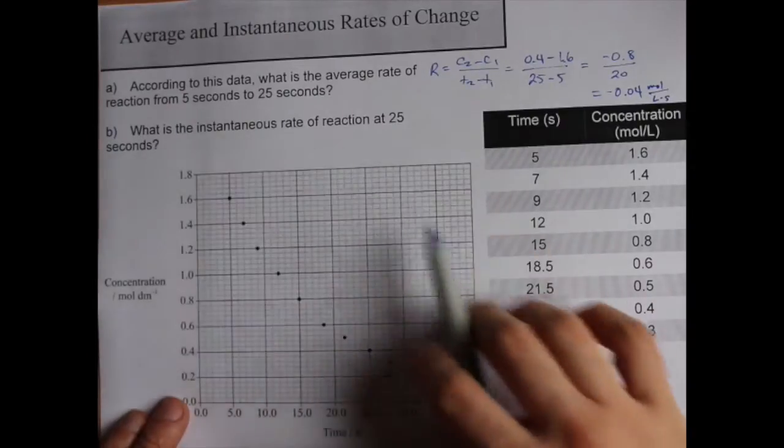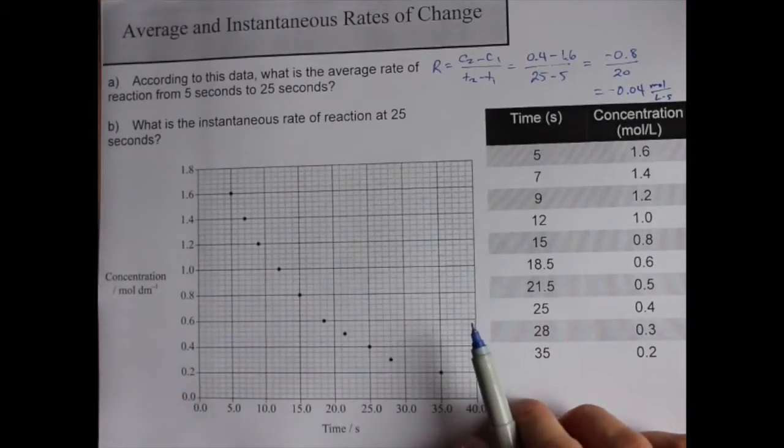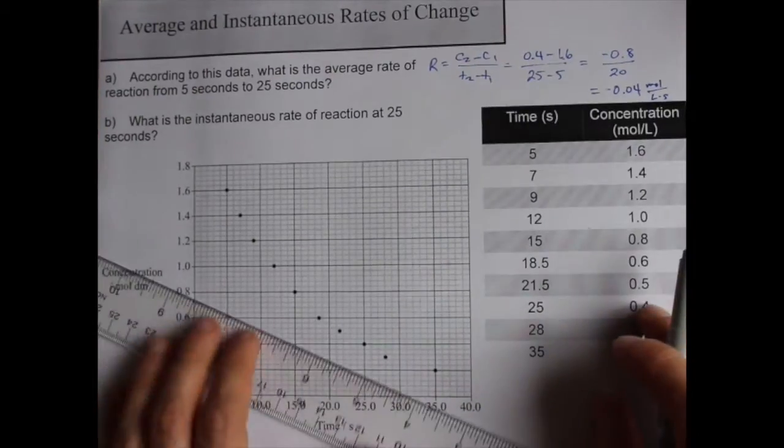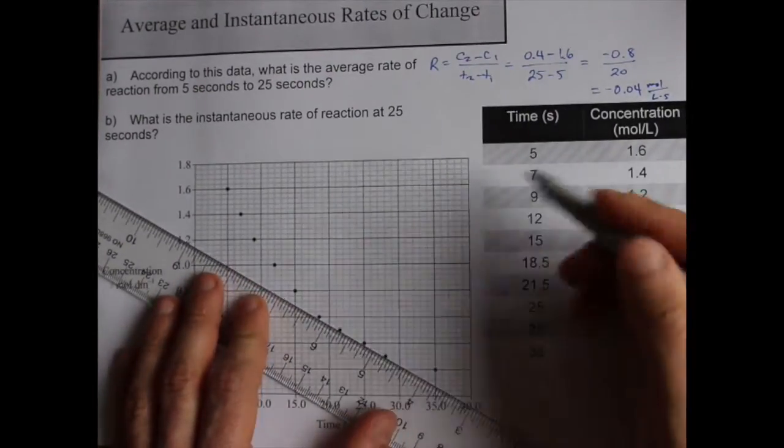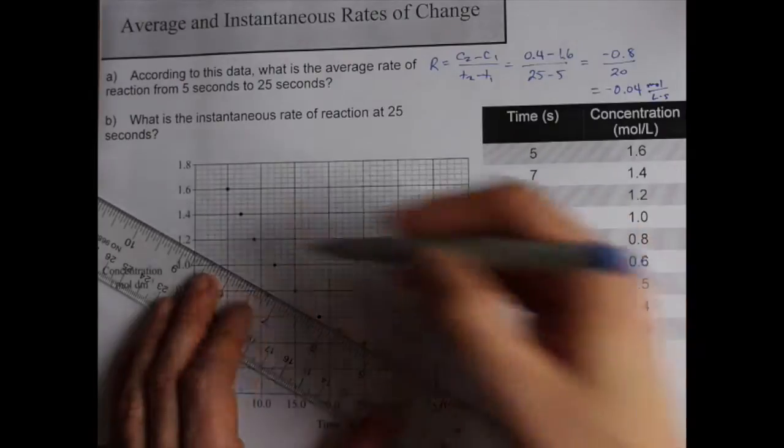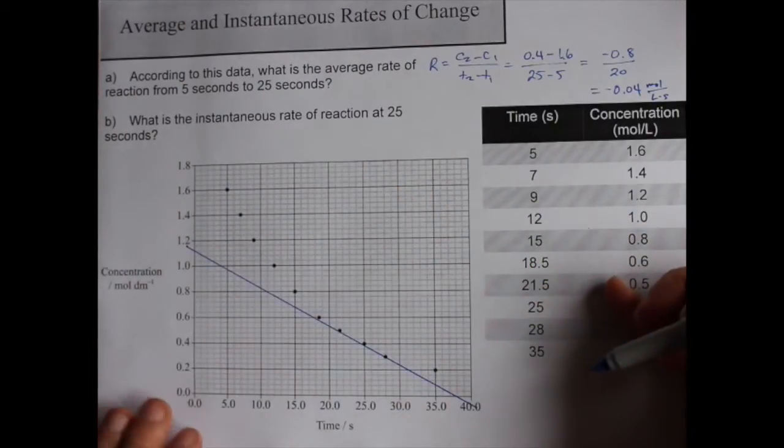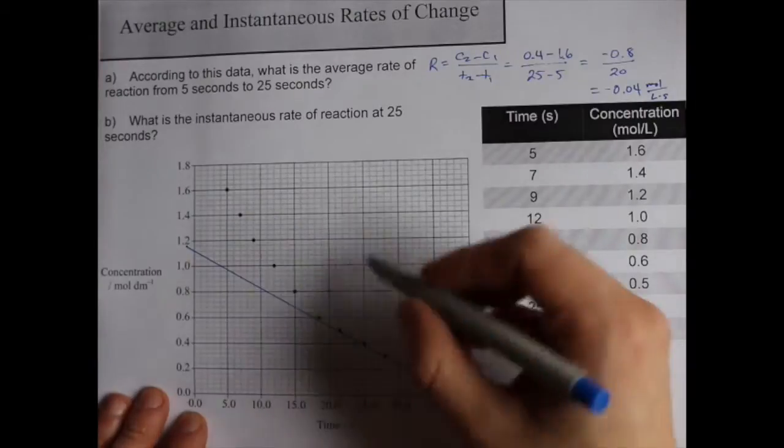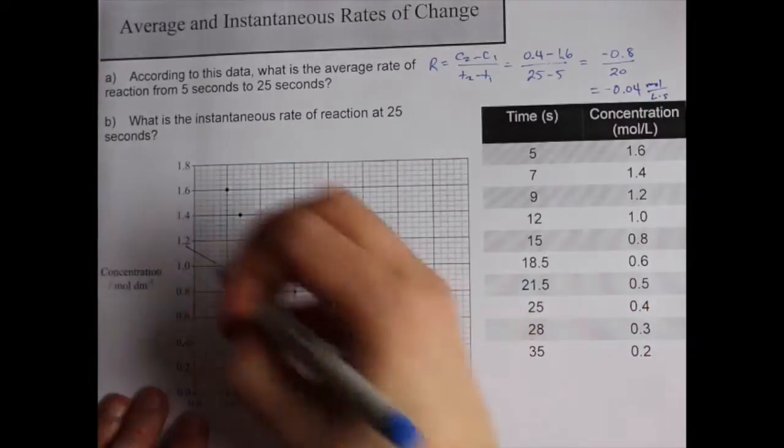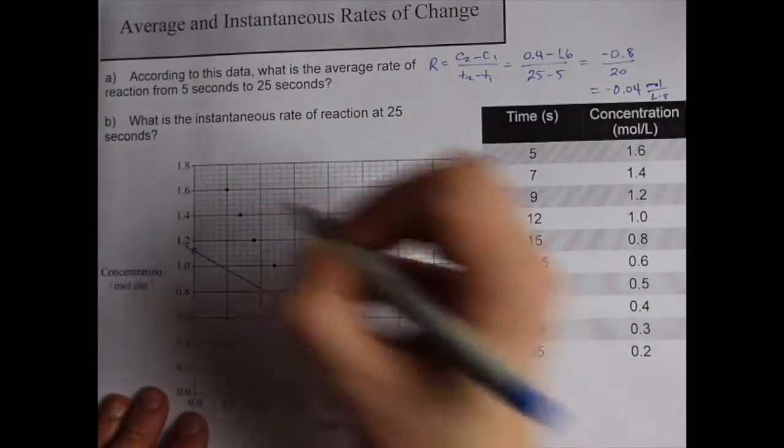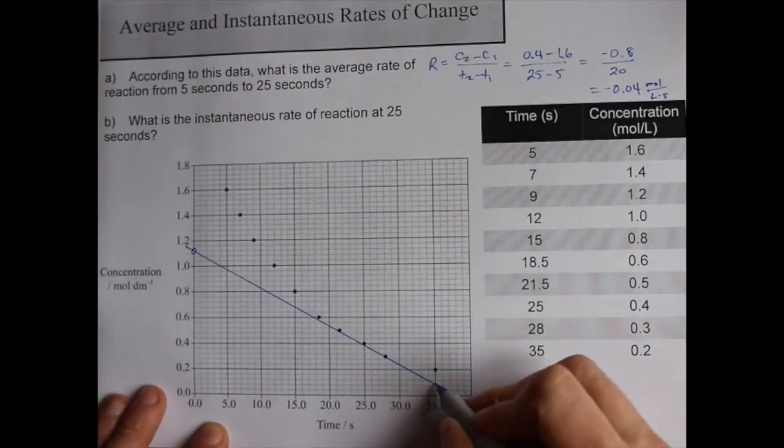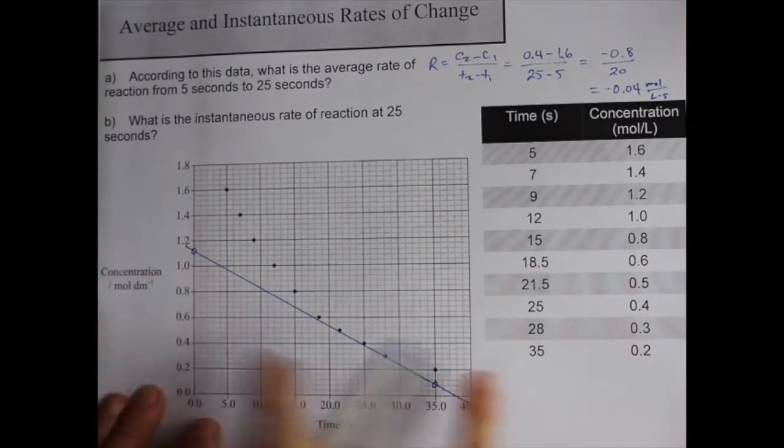And the instantaneous rate of reaction at 25 seconds. You're probably going to have to draw a tangent line at 25. One that has about the same slope as the curve itself. And then you've got to find some nice points that you can plug into the equation. I'm going to use that point and this point. I like picking my points pretty far apart.